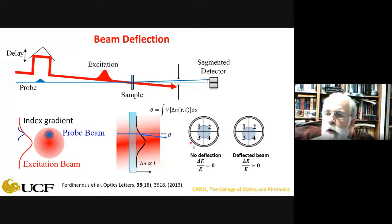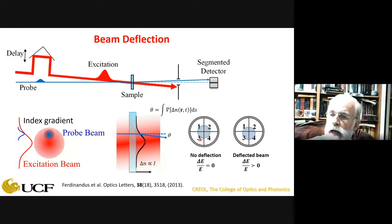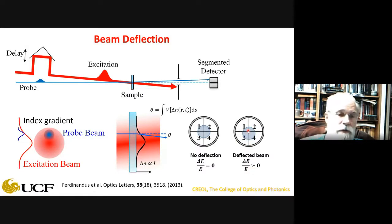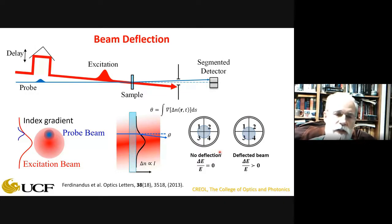Detection uses a quad-cell detector — the same type used in atomic force microscopy. The normalized signal ΔE/E = (channels 3+4 − channels 1+2) / (1+2+3+4) is zero without the excitation beam. When the excitation is on, the probe deflects and the difference becomes nonzero, with its sign indicating whether n₂ is positive or negative. The sign of the index change is directly observable.